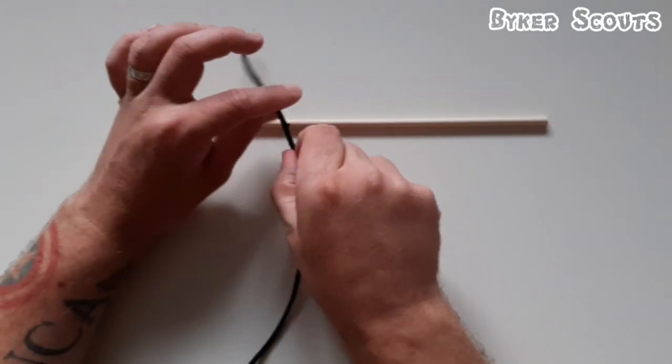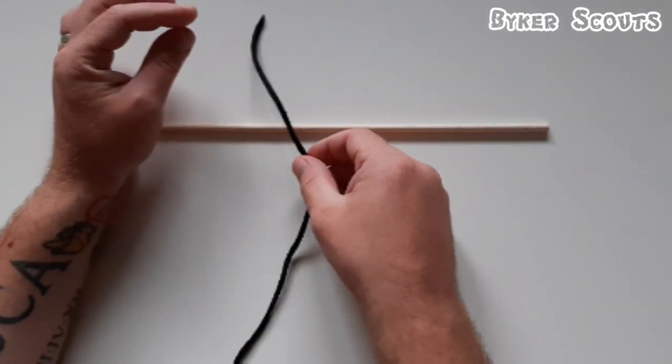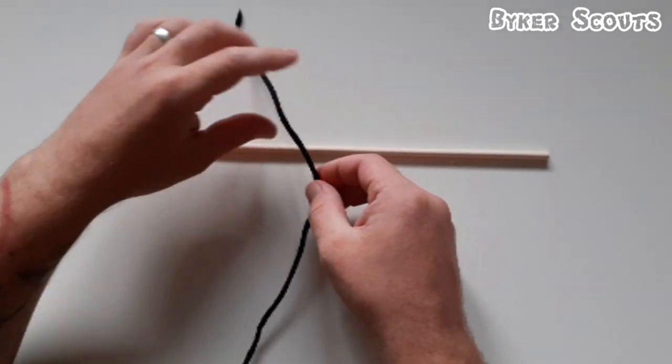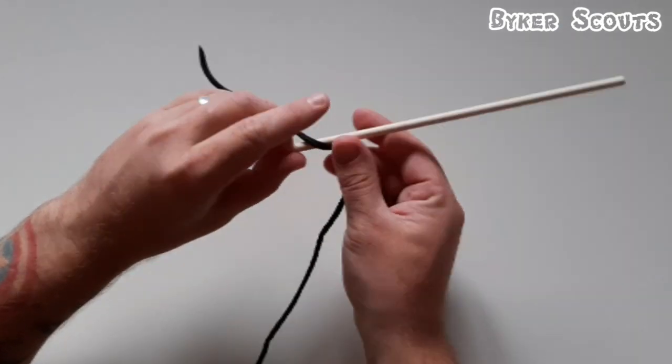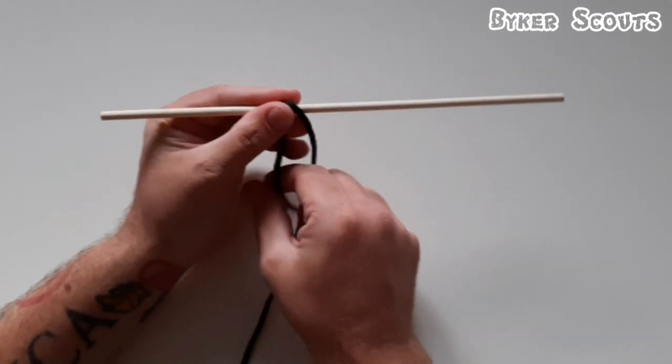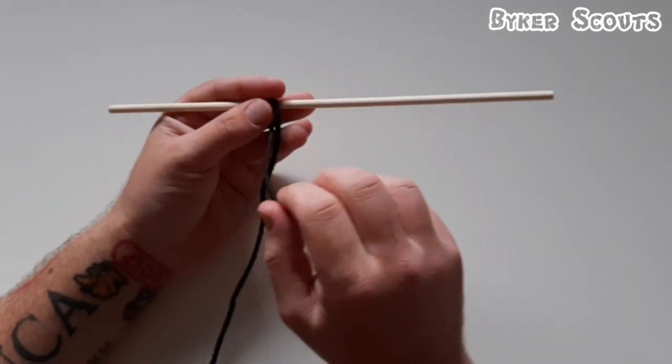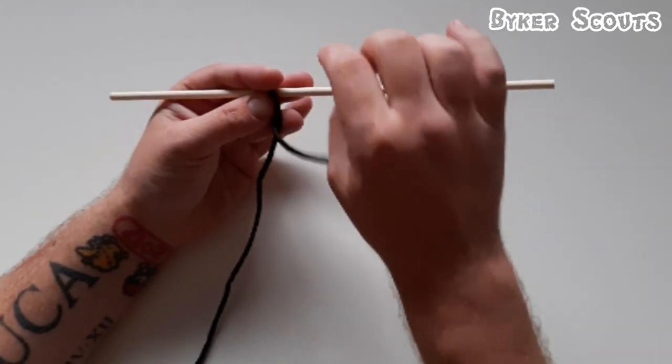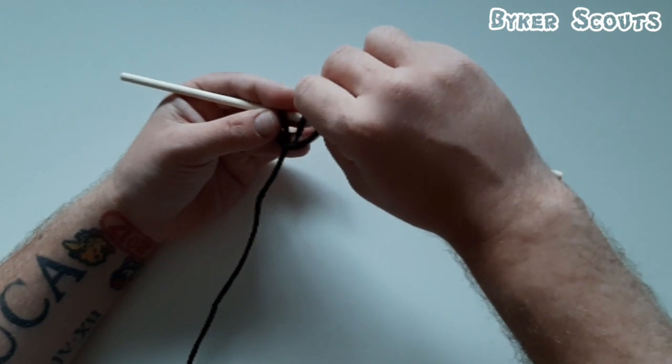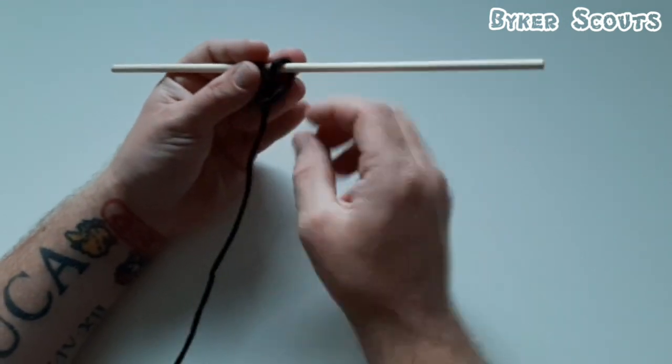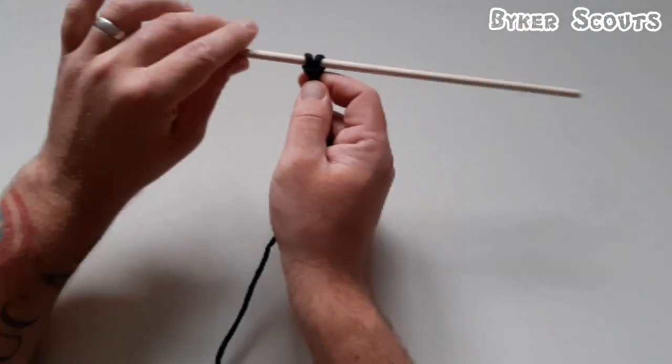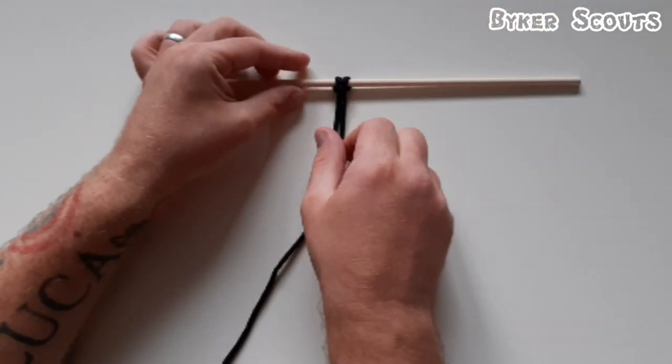With this hitch we'll be doing a cow hitch, which is a lot similar to the lanyard hitch but we're just using one end. What you're doing is bringing it over the dowel, bring it round and under. You bring it across, going up and round the dowel there, and then just pull it tight. There you have the cow hitch.